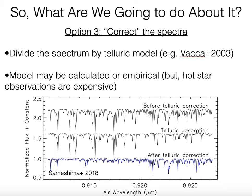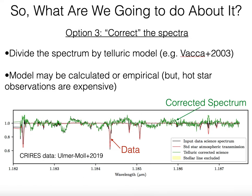Option three might be to correct the spectra—an idea that goes way back in observational astronomy. You divide your stellar spectrum by some telluric model, which could be calculated or empirical. By empirical, I mean an actual observation of a hot featureless star taken close in time and at similar air mass to your stellar spectrum. An example is shown here: on top, a spectrum containing both stellar and telluric lines; in the middle, your telluric spectrum; and on the bottom, your corrected stellar spectrum. Using CRIRES data in the near-infrared, this method does a reasonably good job, but at the expense of observing time—you're using valuable time not only to observe your exoplanet hosts, but also a set of calibrators.